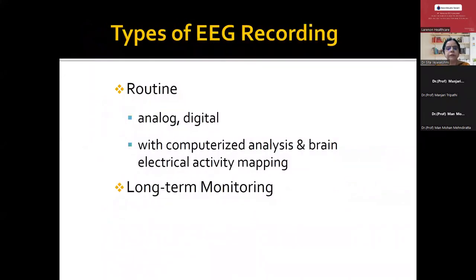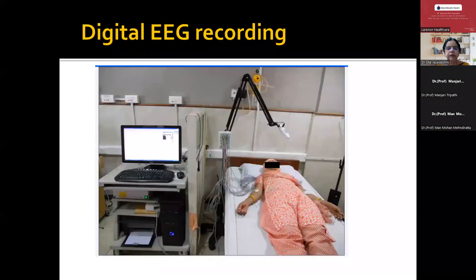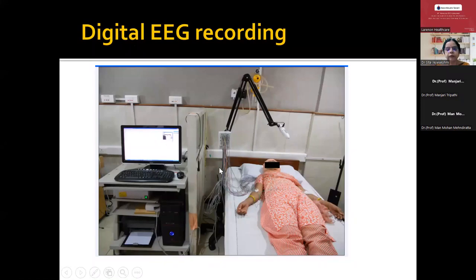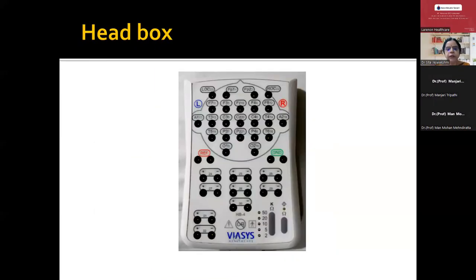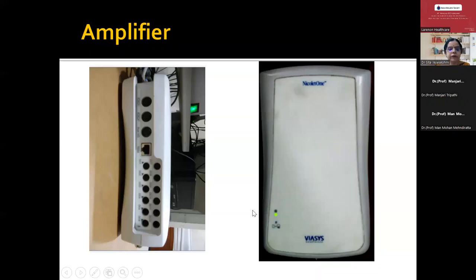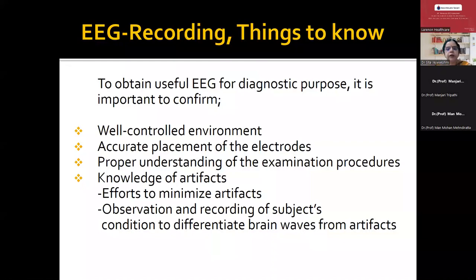What are the types of recording? Previously we used analog recordings; now we have digital recordings, which made our life very easy — we can use these machines for long-term recording varying from 1 hour to a few days to almost 7 to 10 days based on indication. In the digital machine, you can see the monitor, CPU, junction box, electrodes connected to the brain, and the cortex stimulator. The head box is where you put the electrodes, which are numbered very conveniently. The amplifier amplifies the EEG signal.